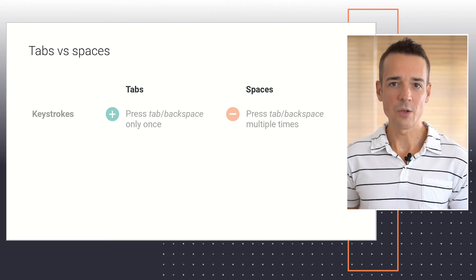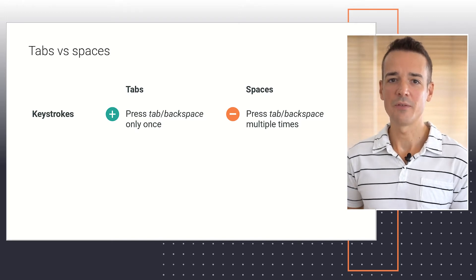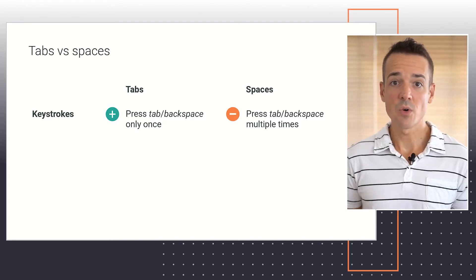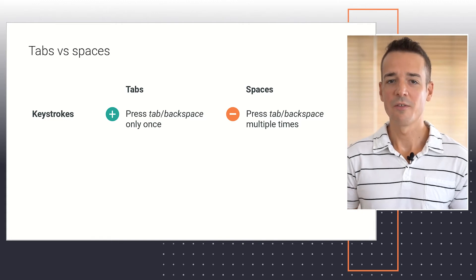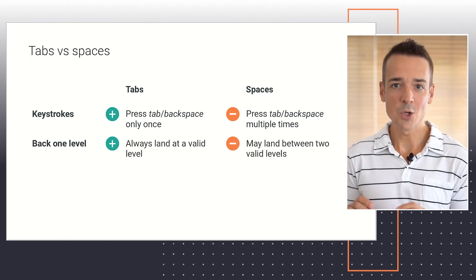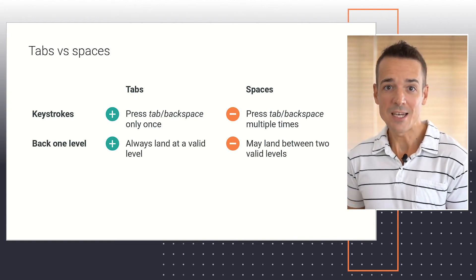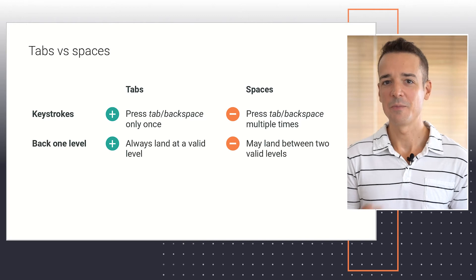There is a never-ending debate in the Python community about whether one should use tabs versus spaces for indentation, and there are good reasons to argue for one approach or the other. In favor of tabs, we could argue that only one keystroke — the tab or backspace key — is needed to add or remove one level of indentation, whereas the use of spaces would require multiple keystrokes for the same purpose. Additionally, going back one level of indentation is guaranteed to make you land at a valid position when you're using tabs, while spaces may make you end up with an invalid number of them, as we saw in the previous example.